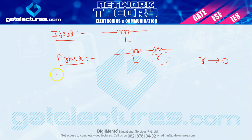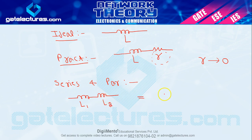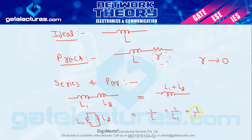Series and parallel connection of inductors is exactly the same as resistors. Two inductors in series: L_eq = L1 + L2. Two inductors in parallel: 1/L = 1/L1 + 1/L2. Even the numericals are the same — just replace R with L and change the unit from ohm to henry.